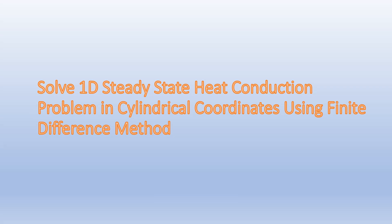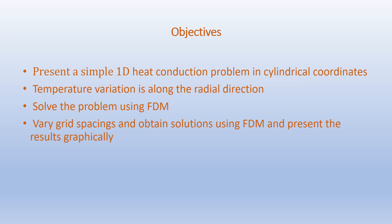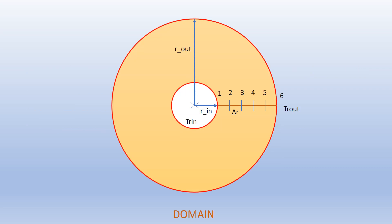Hello friends. In the previous videos we have solved some 1D steady-state and transient heat conduction problems in Cartesian coordinates using finite difference method. In this video we are going to solve a 1D steady-state heat conduction problem in cylindrical coordinates using finite difference method. Our objectives are to present a simple 1D heat conduction problem in cylindrical or polar coordinates, where the temperature variation is considered along the radial direction only. We will solve the problem using finite difference method, vary grid spacings, obtain solutions, and present the results graphically.